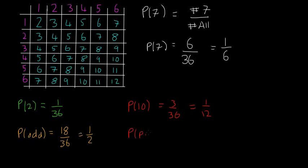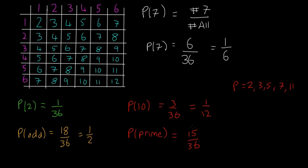The last one is P of prime — the probability of rolling the dice and getting a prime number. The best thing to do would be to list out all the different prime numbers between 1 and 12. The prime numbers are 2, 3, 5, 7, and 11. The definition of a prime number is any number whose only factors are 1 and itself. So the probability of getting a 2, 3, 5, 7, or 11 — if you count up all those values, you'll find that it's 15. So it's 15 over 36, and that's the probability of getting a prime number when you roll the two dice.